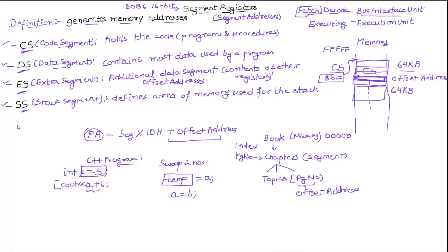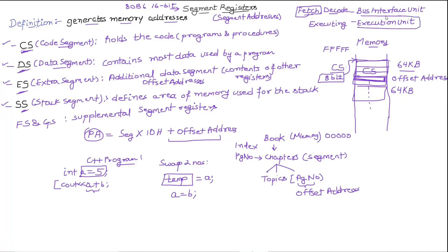We also have another set of registers called FS and GS, which are supplemental segment registers used to store supplementary data. In the next tutorial, we are going to study the registers inside the execution unit, known as multi-purpose registers. We will also discuss some special-purpose registers in the bus interface unit, such as RIP (the instruction pointer), RSP (the stack pointer), and RFLAGS. That's all for this tutorial — thanks for watching.